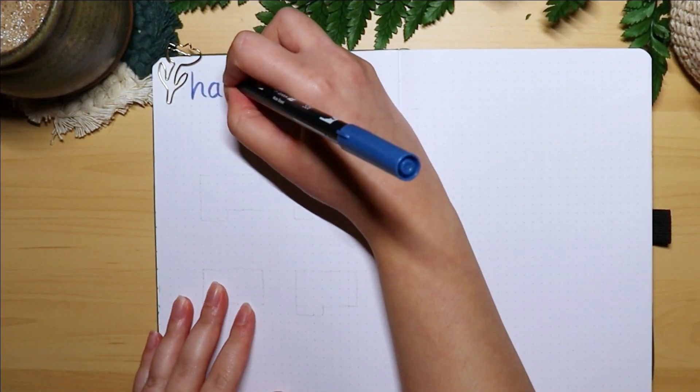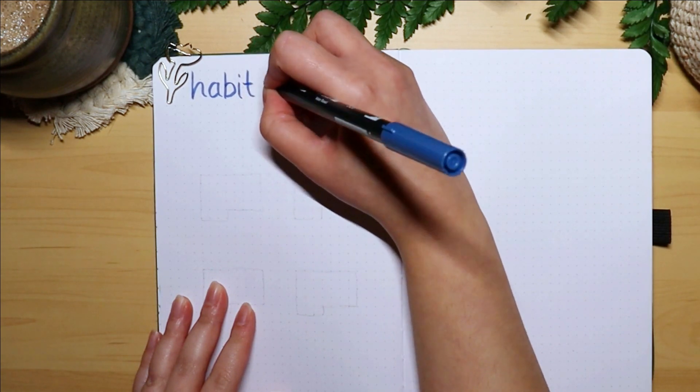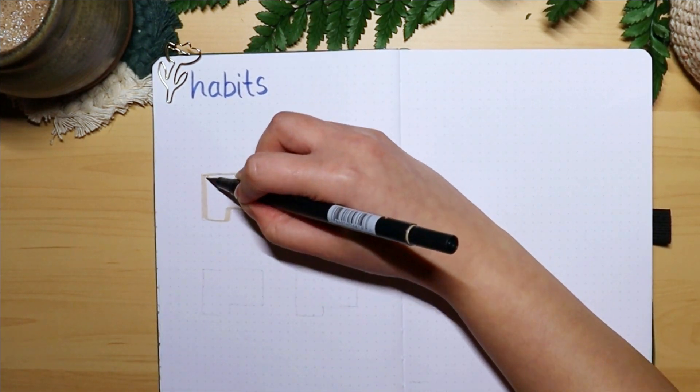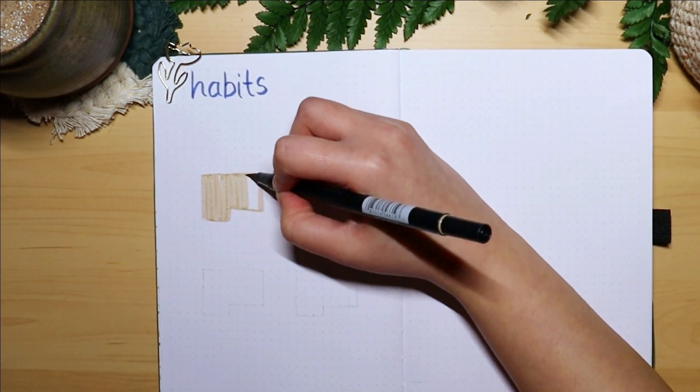For my habit tracker, I'm going in with my regular four habits just using a tan brush pen to color in my trackers.